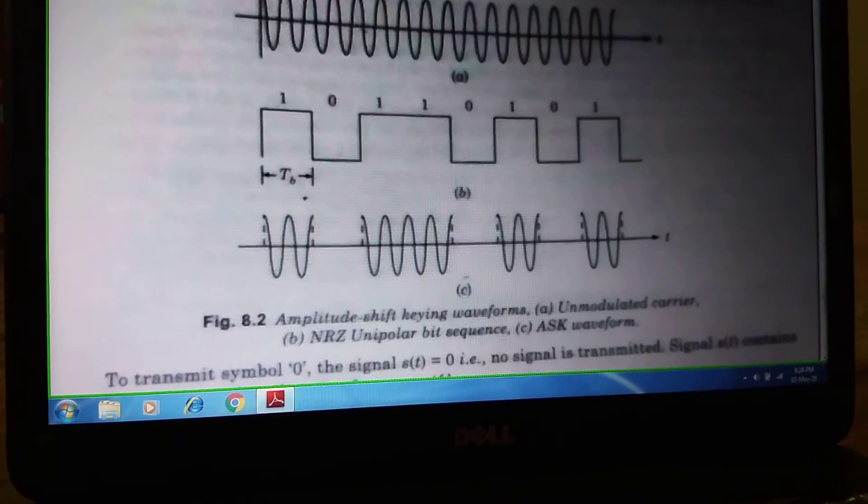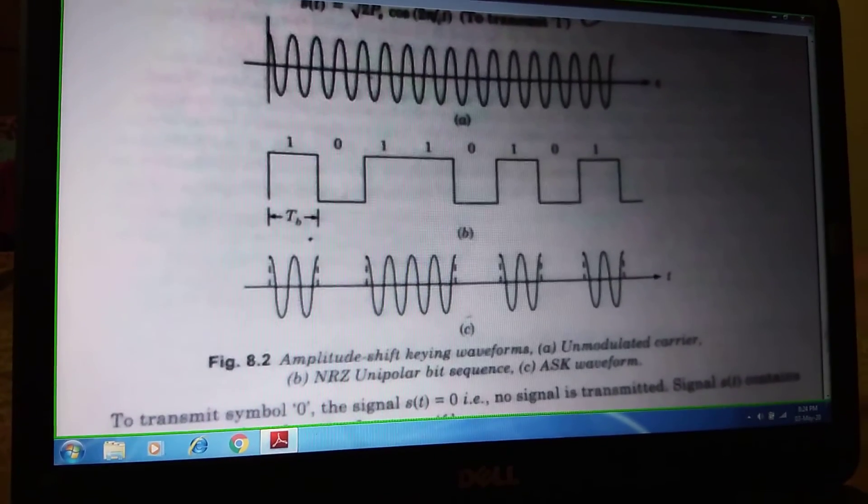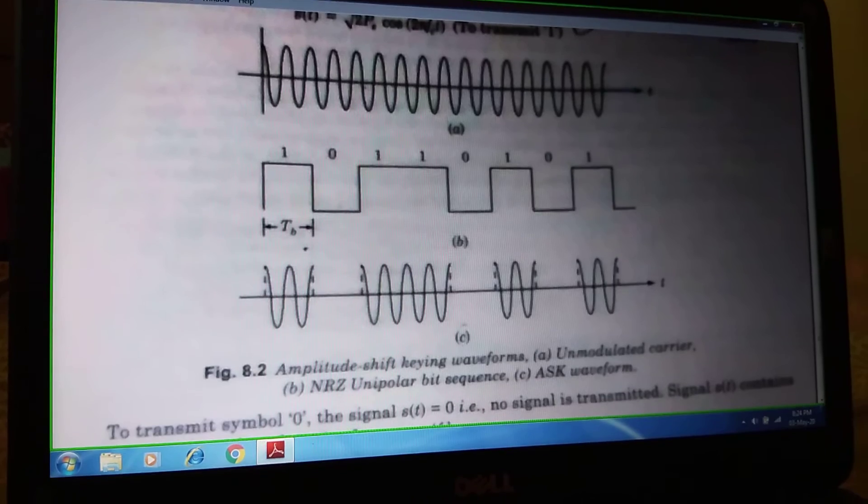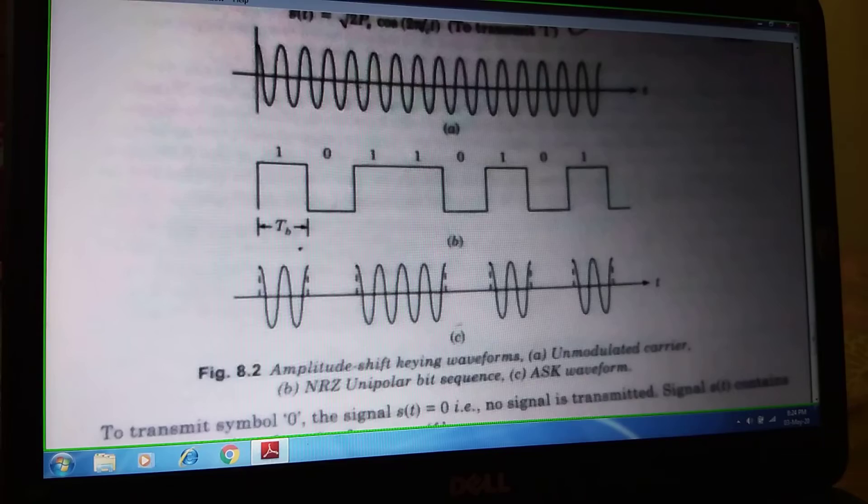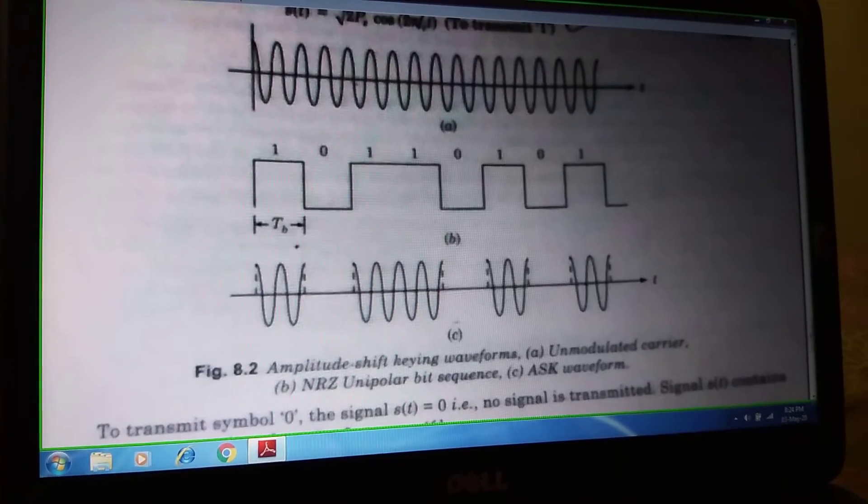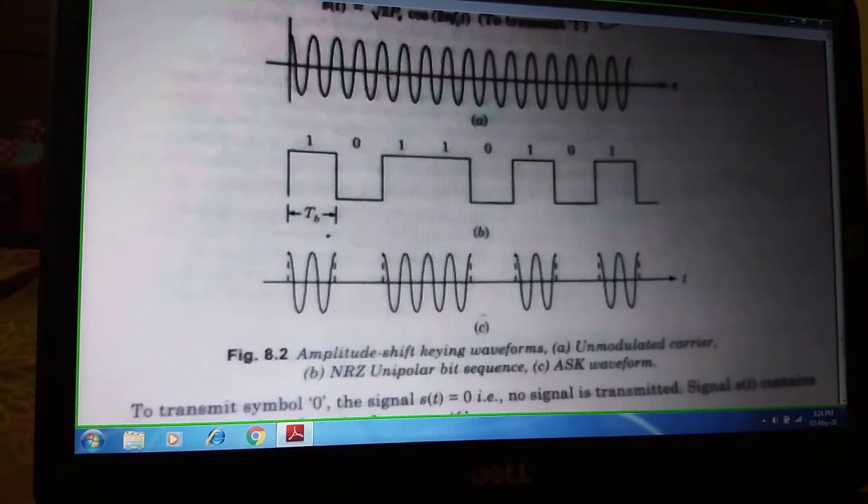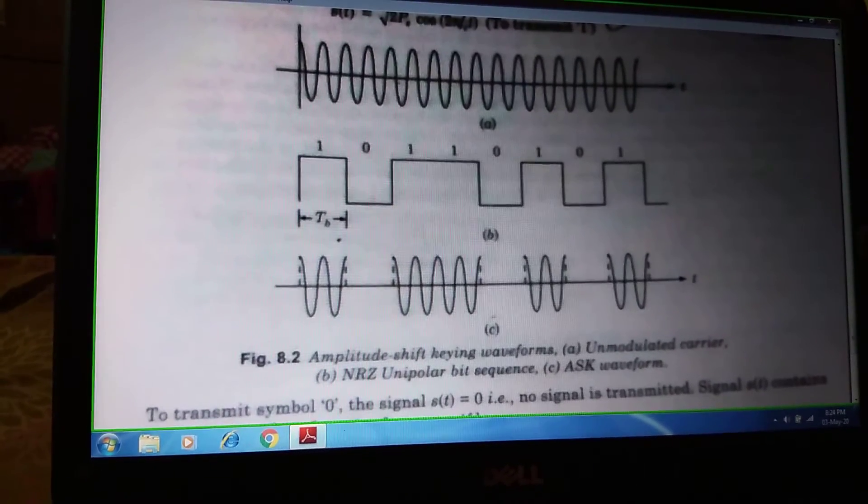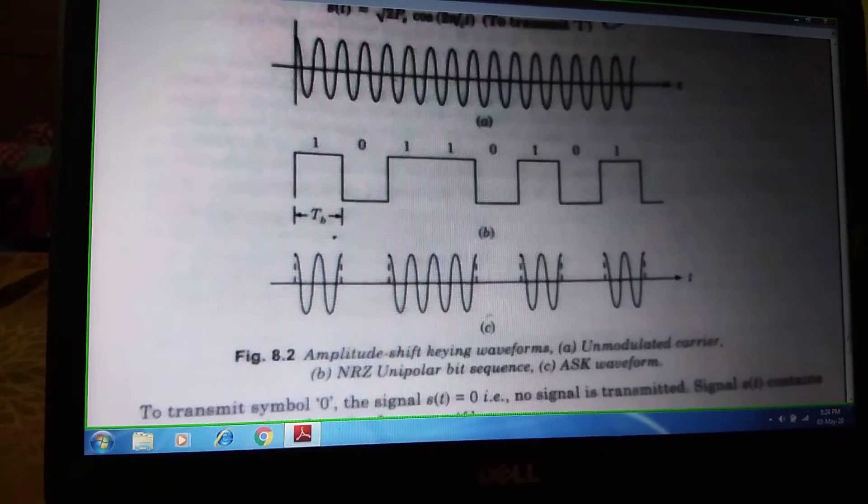So depending upon the unmodulated carrier and the NRG unipolar bit sequence, we are getting the ASK waveform. Figure C shows the output, the ASK waveform we are getting. When we are getting 1, we get the waveform. But when we are transmitting 0, we are not getting anything. So depending upon the values of 1 and 0, we are getting the respective waveform.